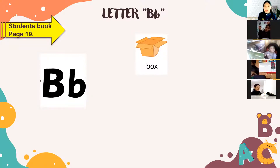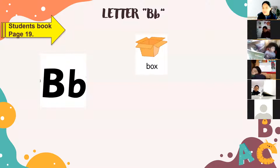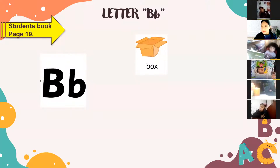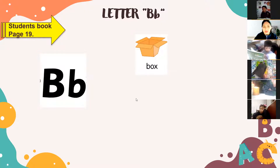B for box. Con la B se escribe la palabra 'box.' What is box? Box is a box — una caja, okay? Repeat with me: box. Just one time, okay — solo una vez tienen que repetir. Very good, continue.